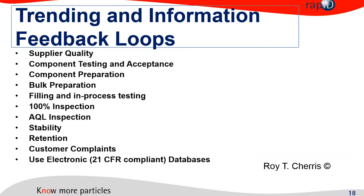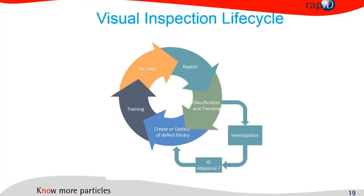This overview covers all parts of your production processes where you could look into and frequently check quality with respect to particulate matter, keeping you in good control over these critical quality aspects — for example, feeding customer complaints into your system, or looking at stability and retention samples from time to time to see if something changes in your product over time.